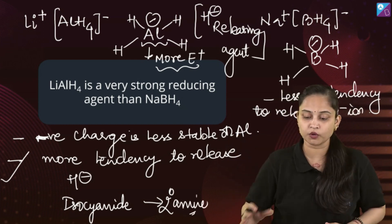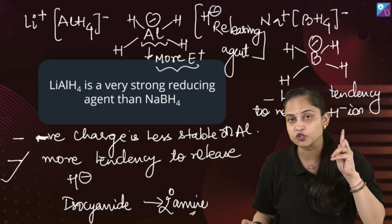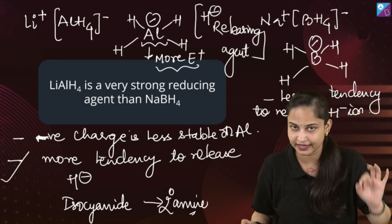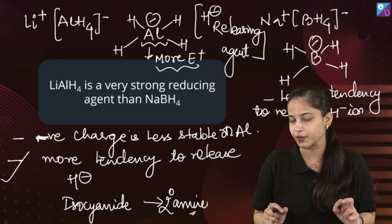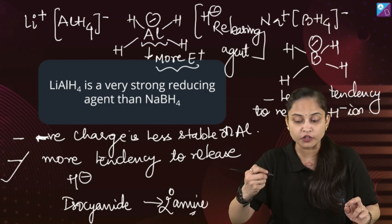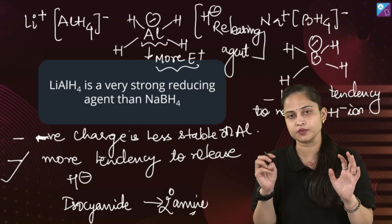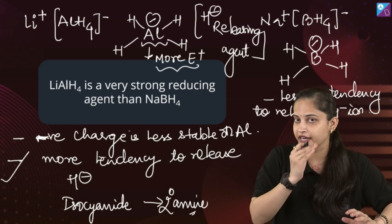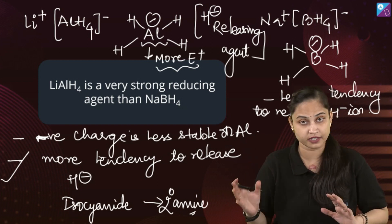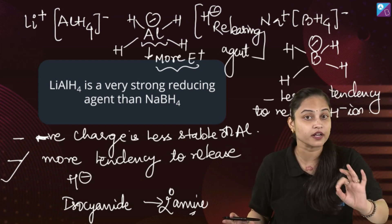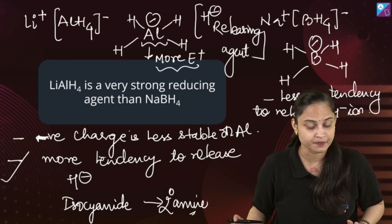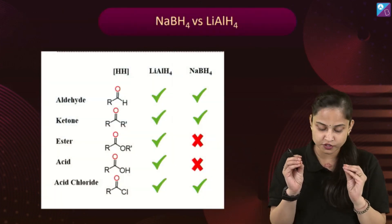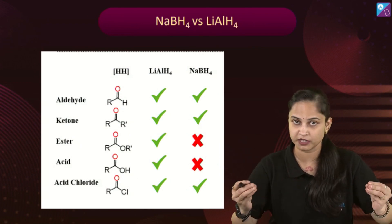Talking about sodium borohydride, always remember it does not reduce acids and acid derivatives, except acid halides. Sodium borohydride is a highly selective reducing agent. It is highly selective for aldehydes and ketones, wherein it reduces aldehydes to primary alcohols and ketones to secondary alcohols. It does not reduce esters, for example.